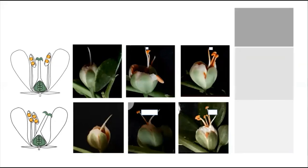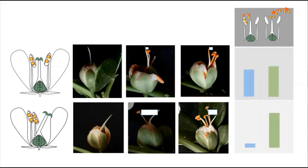We found that the degree of selfing was significantly larger in C-morph than in L-morph, while the degree of outcrossing was more or less equal.